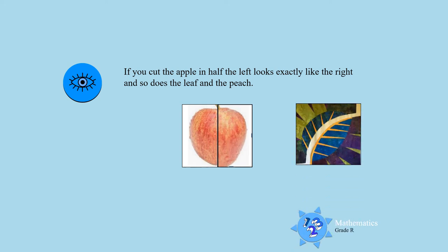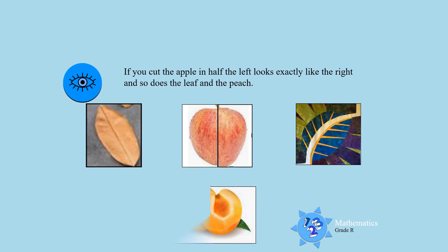Now you can also do the same with the leaves. When you cut it in half, you will see the left side and the right side will look the same. You can also use a peach or any other fruit that you find. Cut it in half and see left and right looks exactly the same.